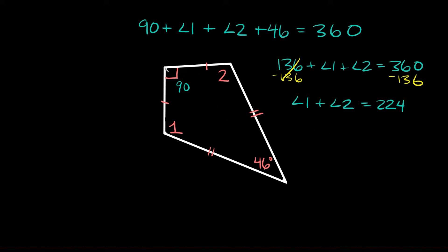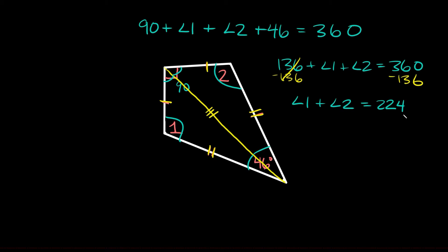Drawing the diagonal shows side-side-side congruence: this side is congruent to this side, this side is congruent to this side, and the shared side is congruent to itself. So all three sides are congruent, meaning all three angles are congruent. Since angle one equals angle two, and 90 plus 46 equals 136, we subtract 136 from 360 to get 224. Half of 224 is 112, so angle one and angle two are both equal to 112 degrees.